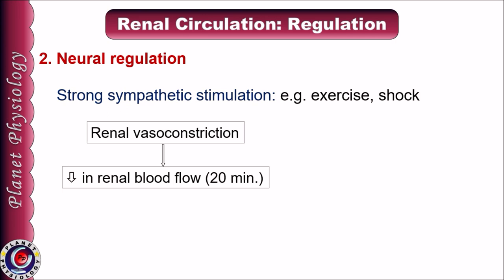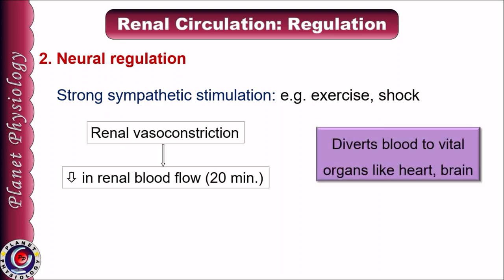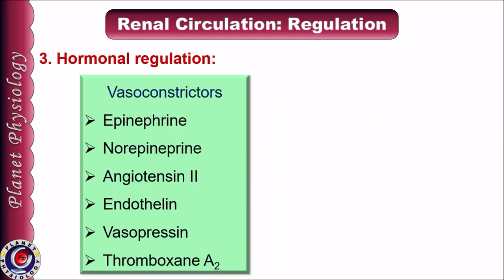For neural regulation, kidneys are supplied by the sympathetic nervous system. Whenever there is strong sympathetic stimulation, as in exercise or shock, it causes renal vasoconstriction and decreases renal blood flow. This reduction usually lasts for about 20 minutes, during which blood is diverted to vital organs like the heart and brain, or to exercising muscles. After 20 minutes, in spite of sympathetic stimulation, renal blood flow returns to normal because of the strong autoregulatory mechanism.